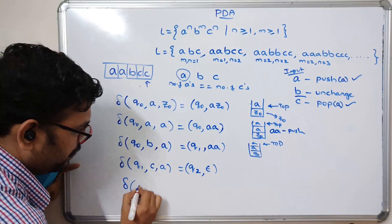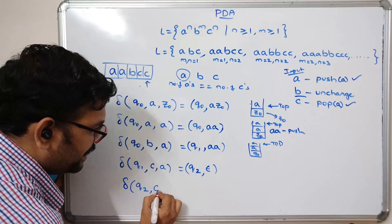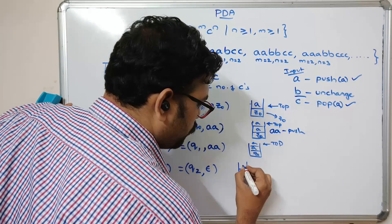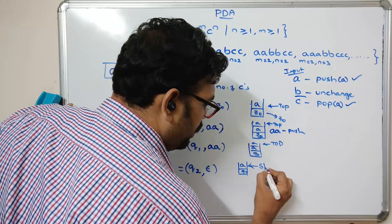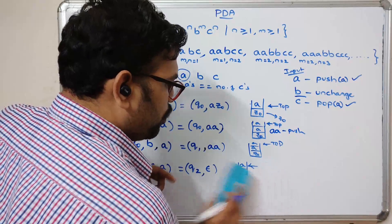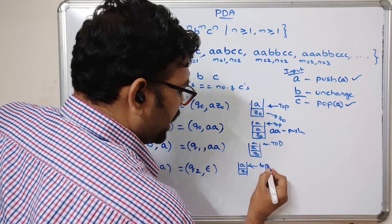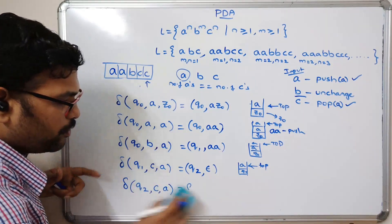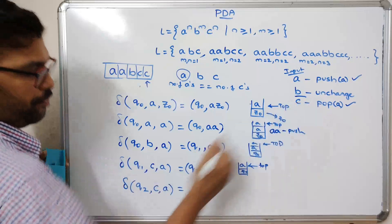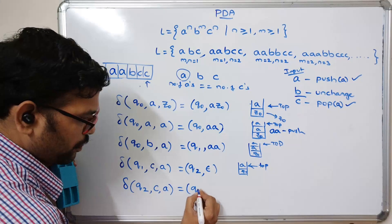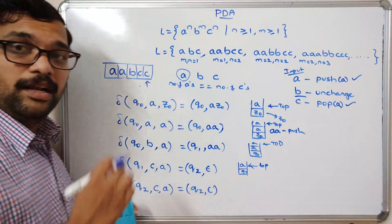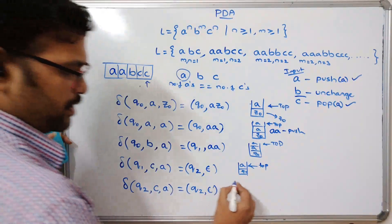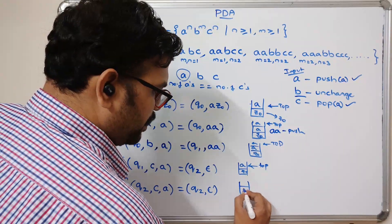Next, delta(q2, c, a): the 'a' has been removed and the top of the stack is again 'a'. Since the input is still 'c', we pop again. So delta(q2, c, a) gives q2 with epsilon, and the next 'a' is also popped. Now the stack only contains Z0.